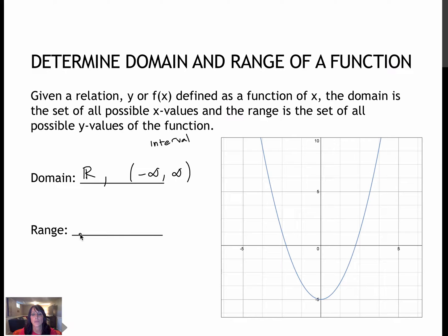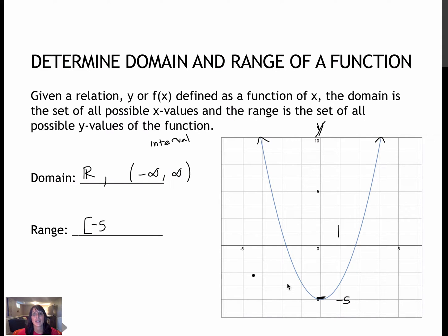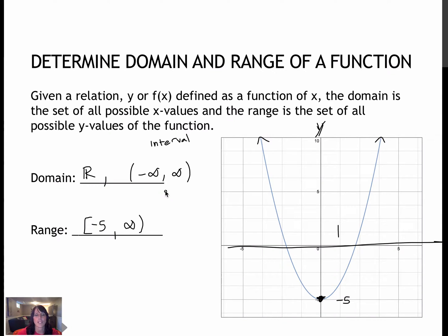Now the range is a different story. Looking at the y values in this graph, I can see that my very lowest y value is right here at negative 5 — this is the y-axis. My highest y value would go on forever, so that goes off to infinity. My range would be starting at negative 5, and negative 5 is included — that's a closed bracket because this point is exactly at negative 5 — up to positive infinity. You can never include infinity, so my range is from negative 5 up to forever.